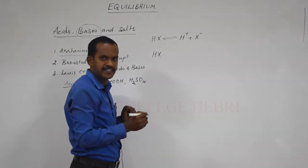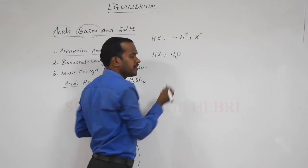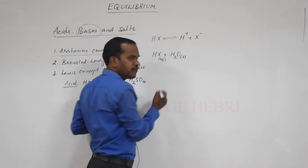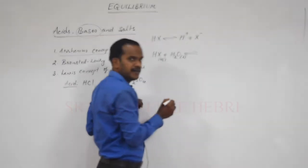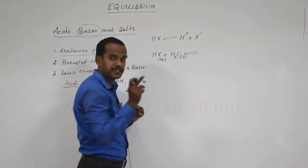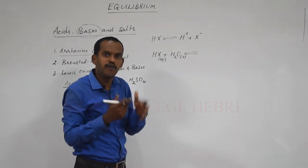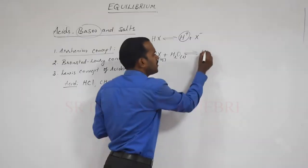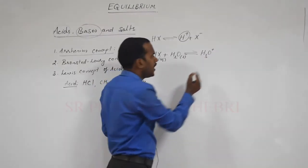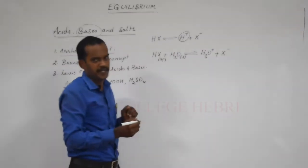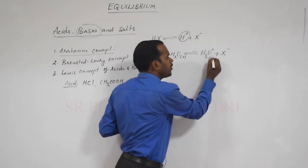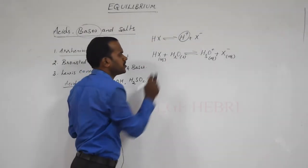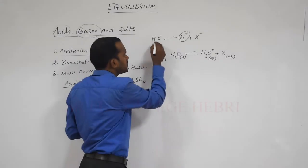If I add HX — the acid — to water H2O, you must remember the physical states when you represent this, as you studied in thermodynamics. HX is aqueous, water is in liquid form. When added to water, the acid gives H+, and that H+ is taken by H2O to form the hydronium ion H3O+. The hydrogen formed as H+ is taken by water, so it forms H3O+ and the anion X− is released. H3O+ is in aqueous form, X− is in aqueous form, HX is in aqueous form, and H2O is a liquid.